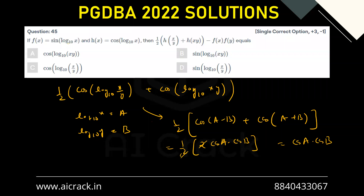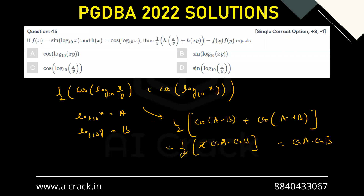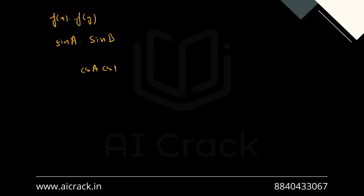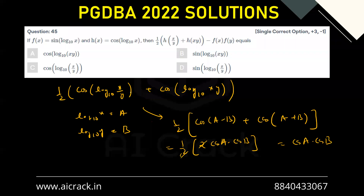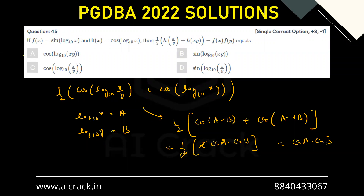Now for the second term: f(x)·f(y) = sin(log₁₀x)·sin(log₁₀y) = sin(a)·sin(b), with a minus sign. So the entire expression becomes cos(a)cos(b) − sin(a)sin(b), which is exactly cos(a + b). Since a + b = log₁₀x + log₁₀y = log₁₀(xy), the answer is cos(log₁₀xy), so option A is correct.